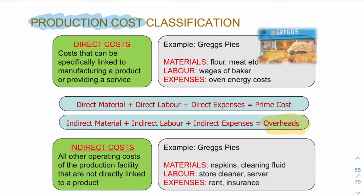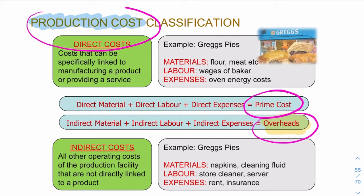So we have prime costs and overheads, both contributing to something called production cost.